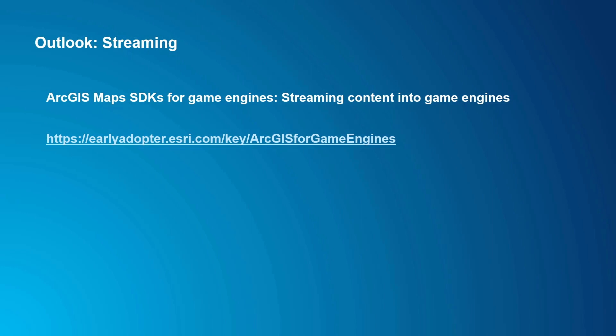Another example is streaming. So far, we've basically been working with an offline process — bringing GIS and CAD data into an external tool such as CityEngine and then exporting all the data into a file and re-importing it into the game engine. As these models are getting bigger, an alternative technology is to stream the data over the network directly into the game engine, and this is what the ArcGIS Maps SDKs for game engines do.